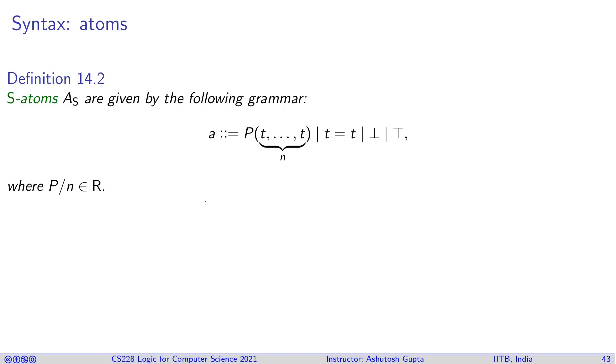Using predicates and terms we can build atoms. We take a predicate with arity n and put that many terms as parameters, and it becomes an atom. Or you take two terms and make them equal; that is also an atomic formula. True and false are also called atomic formulas.